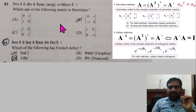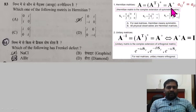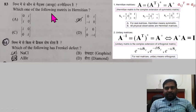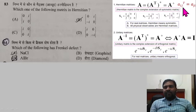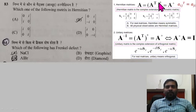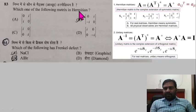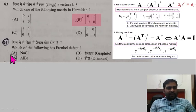Question 83: Which of the following matrices is Hermitian? A matrix is Hermitian if A = A†. This means the transpose conjugate equals the original matrix: (A†)ij = (Aji)*. Option B is the only correct Hermitian matrix.